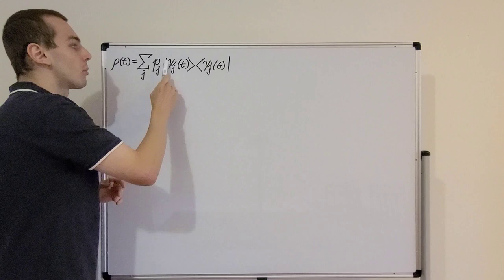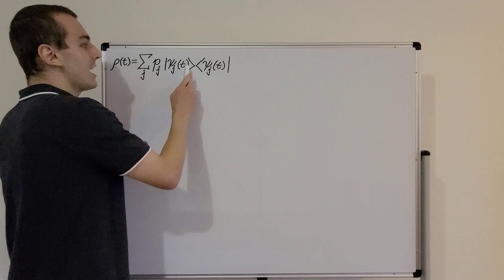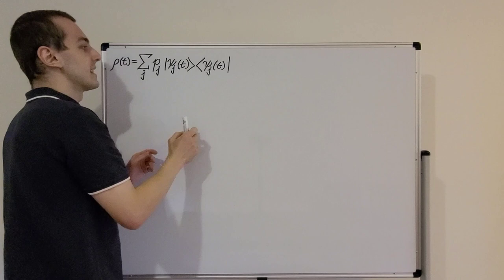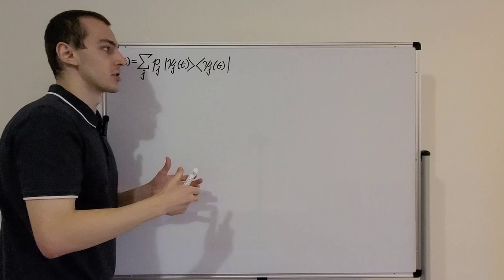These coefficients in the linear combination are probabilities, so this is a probabilistic mixture of quantum states. Because we have the state at a particular time t, we can also rewrite this as the initial state at t equals zero and a unitary operator, which is responsible for the time evolution.